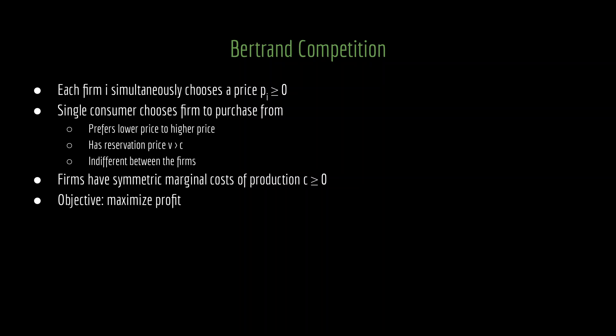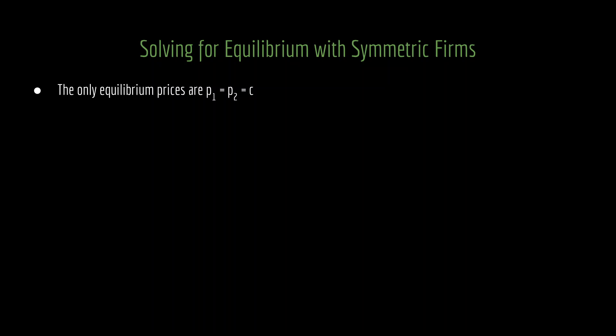Okay, that is the setup for the model. If you want to think on your own about what's going to happen in the equilibrium of this game, now would be the time to pause. Otherwise, I'm going to reveal the answer right now. The only equilibrium prices in this model are P1 equal to P2 equal to C. So the firms choose the exact same price, and that price is equal to their symmetric marginal cost.